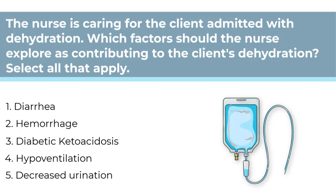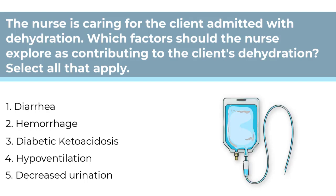The nurse is caring for a client admitted with dehydration. Which factors should the nurse explore as contributing to the client's dehydration? Select all that apply. Number 1, Diarrhea. Number 2, Hemorrhage. Number 3, Diabetic ketoacidosis. Number 4, Hypoventilation. Number 5, Decreased urination. This is an application question in the assessment phase of the nursing process — it is also a select all that applies question. This question is asking you to give conditions causing dehydration. You'll have to apply your knowledge of each of these conditions to choose which answers are correct.